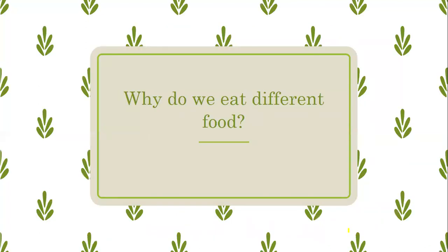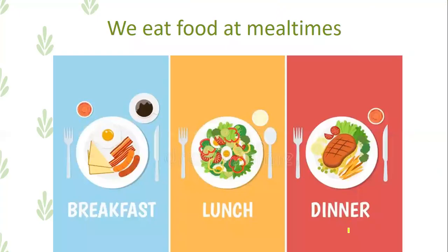القسم الثالث: Why do we eat different food? ليش نحنا بنتناول الأطعمة المختلفة؟ We eat food at mealtimes. نحنا بنتناول الطعام خلال وقت الوجبات. In each day we have three mealtimes: the first meal is breakfast - وجبة الفطور، the second meal is lunch - الغداء، and the third meal is dinner - العشاء. بكل وجبة عنا مجموعة من أصناف الأطعمة الخاصة فيها.